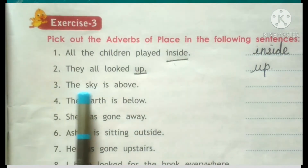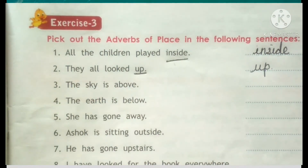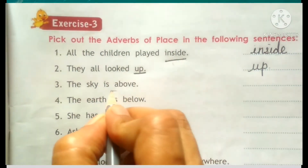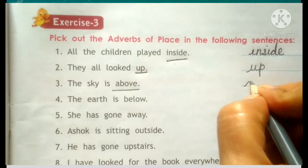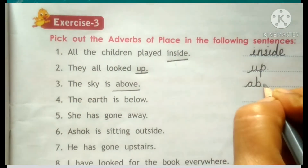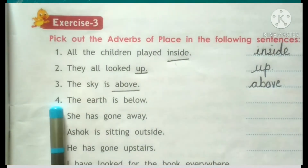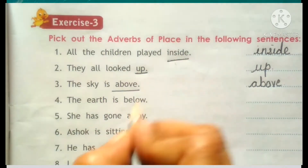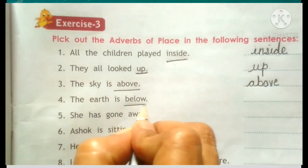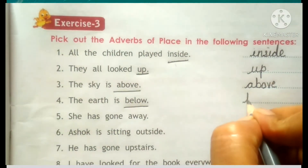Number 3: The sky is above — sky kahan pe hai? Above. So remember, above is the adverb of place. Number 4: The earth is below — earth kahan pe hai? Below — matlab neechi. Write it right here: below.